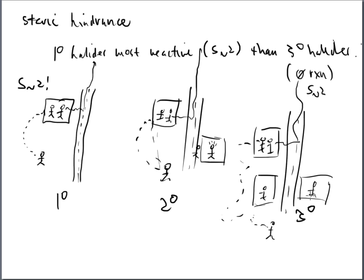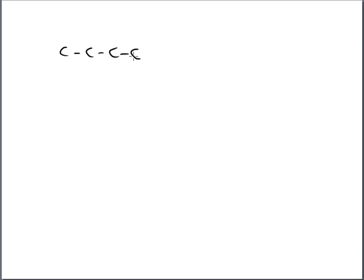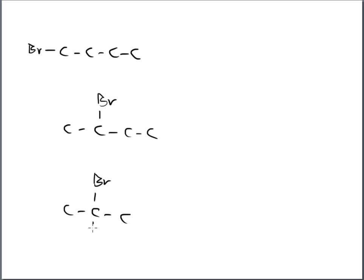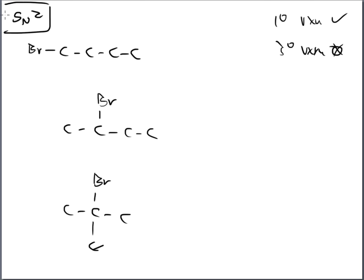Steric hindrance — that's what we're learning about now in regards to substitution. If I have a compound — let's do four carbons across — and the halogen is on the very end, that's primary. If bromine is on the second carbon in, that's secondary. And if we've got a carbon with three other carbons on it, that's tertiary. All three play a different role when it concerns substitution. Primary reacts best and tertiary reacts worst — so much so that we say SN2 substitution is not going to happen with tertiary halides.